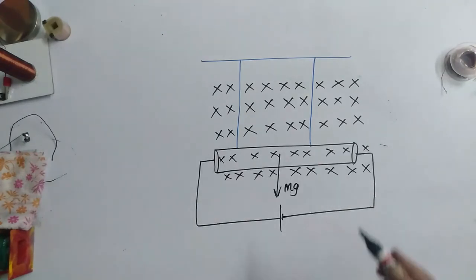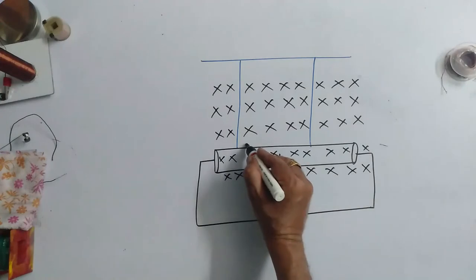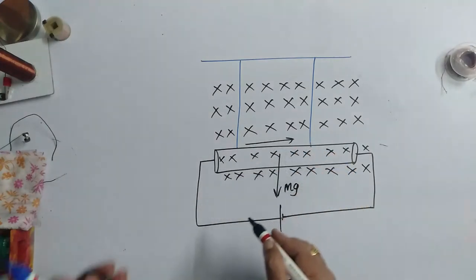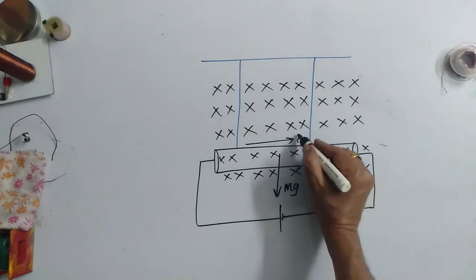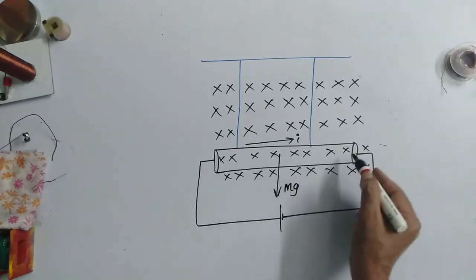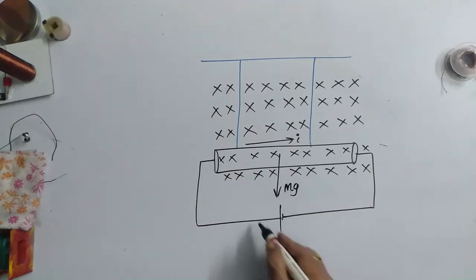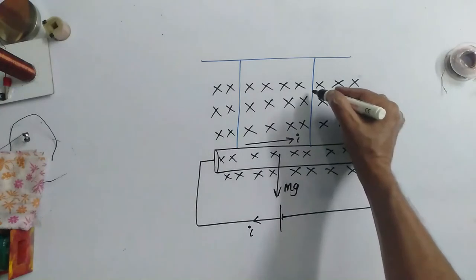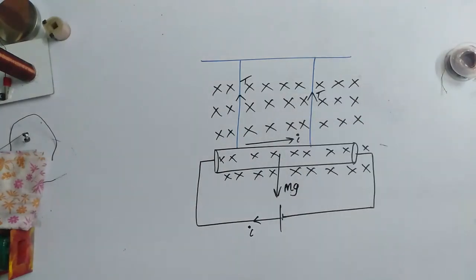Now, the direction of the current is along from my left to right. So, this is the direction of the current. Now, this current carrying conductor is having a mass M and I current is passing through it of course. What is the tension in the two strings? If this is the question, you have to look at the forces.